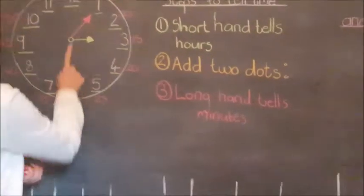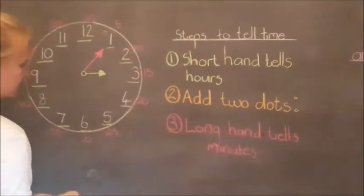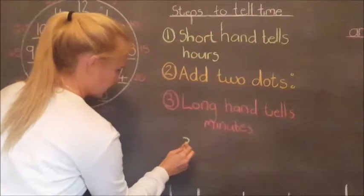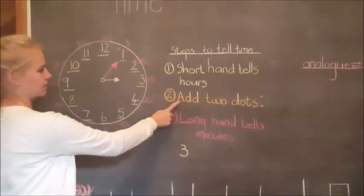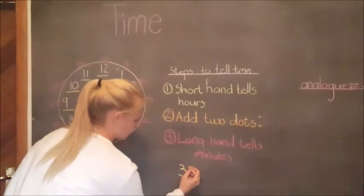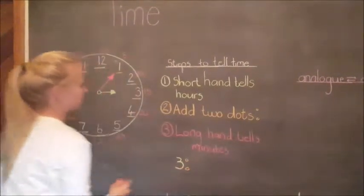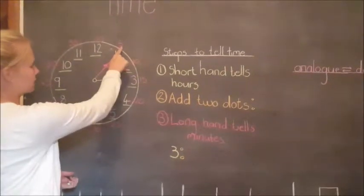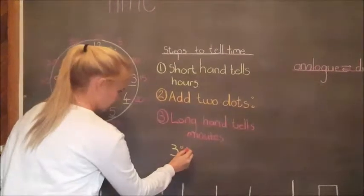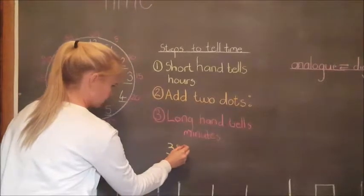Let's work out the time on the clock. Step 1. The shorthand tells us three, which is three hours. The second step add two dots. And the longhand tells us the minutes, which is five. Write down zero, five.